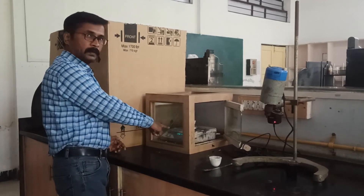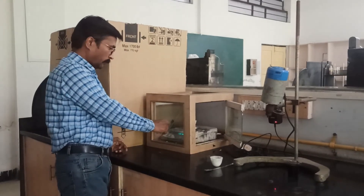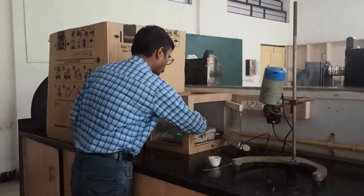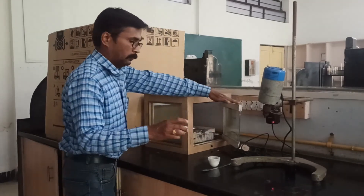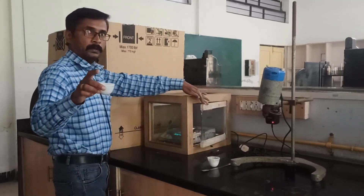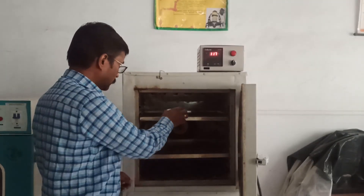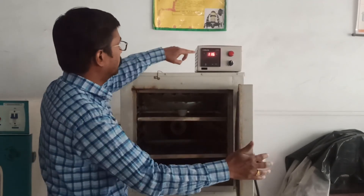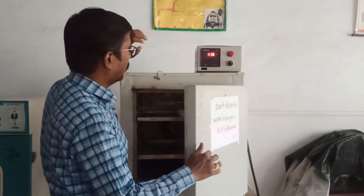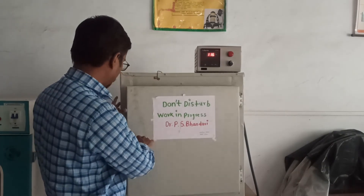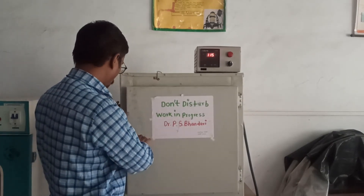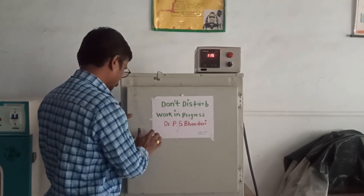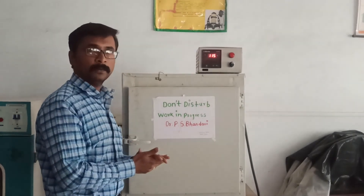Here the 5 grams of sample is placed. We will place the soap sample in a hot air oven at 110 or 100 degrees Celsius for one and a half hour.